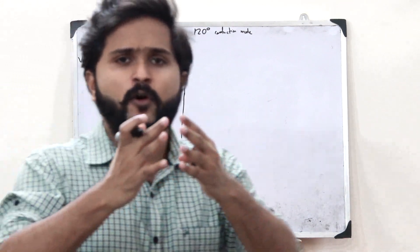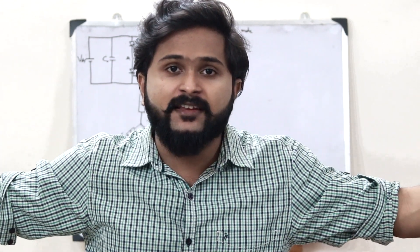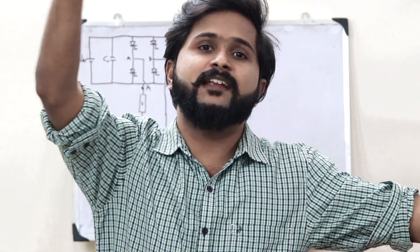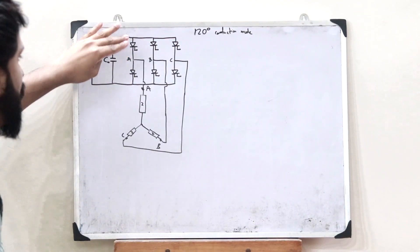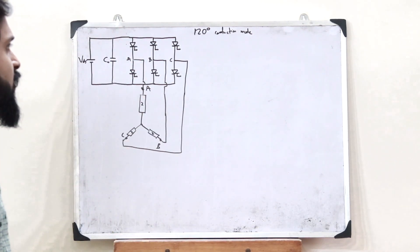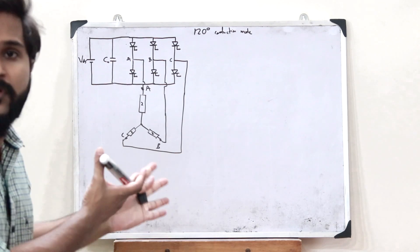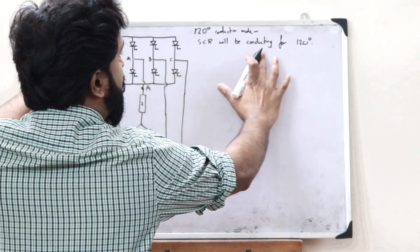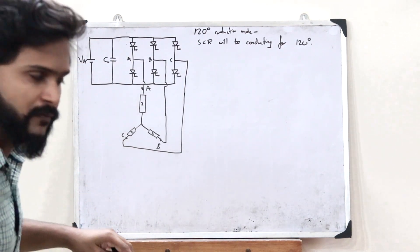The whole time period for a switch is 180 degrees. Out of this 180 degrees, the switch will be turned on for 120 degrees, and for the remaining 60 degrees, the switch will simply be turned off. This switch will be turned on for 120 degrees, then the next switch will be turned on for 120 degrees, and that keeps alternating. That is what you refer to as 120 degree conduction mode. We are using SCRs as these switches, as discussed in the previous video.